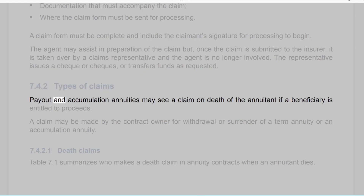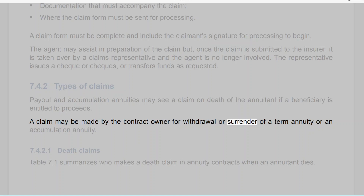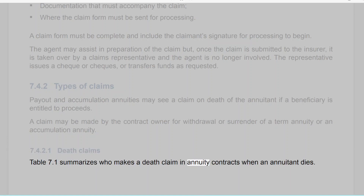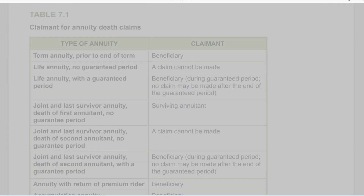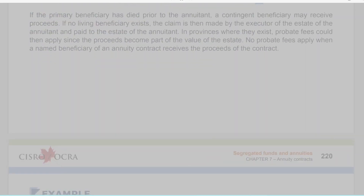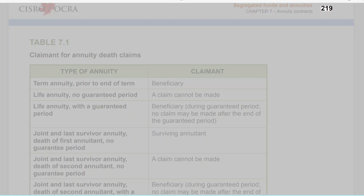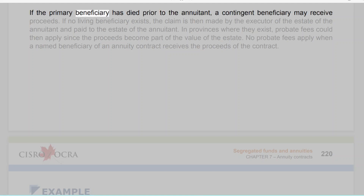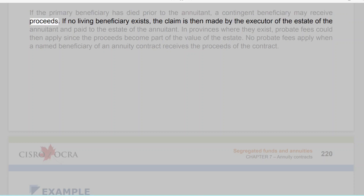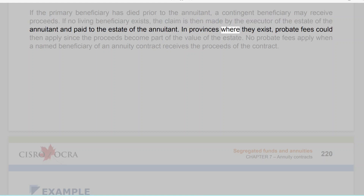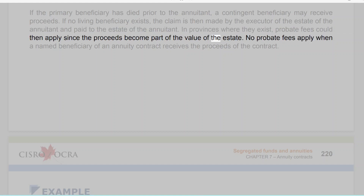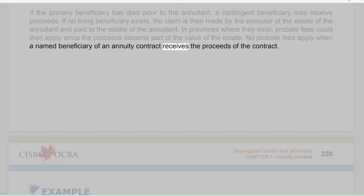Section 7.4.2: Types of claims. Payout and accumulation annuities may see a claim on death of the annuitant if a beneficiary is entitled to proceeds. A claim may also be made by the contract owner for withdrawal or surrender of a term annuity or accumulation annuity. Section 7.4.2.1: Death claims. If the primary beneficiary has died prior to the annuitant, a contingent beneficiary may receive proceeds. If no living beneficiary exists, the claim is made by the executor of the estate and paid to the estate; in provinces where they exist, probate fees could then apply. No probate fees apply when a named beneficiary receives the proceeds directly.